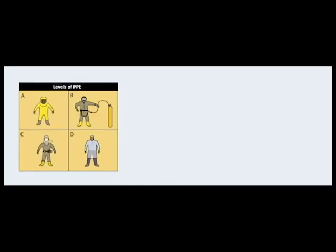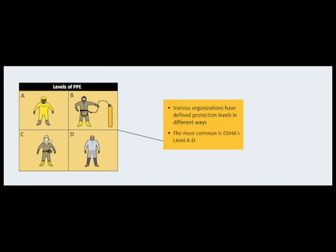Another key concept of PPE is the application of varying levels of protection. These levels differ depending upon the degree of skin and respiratory protection provided. Various organizations have defined protection levels in different ways, but the most commonly cited method used in the United States is OSHA's Level A through D designations. While you don't need to memorize these levels, you should be aware of their major differences.